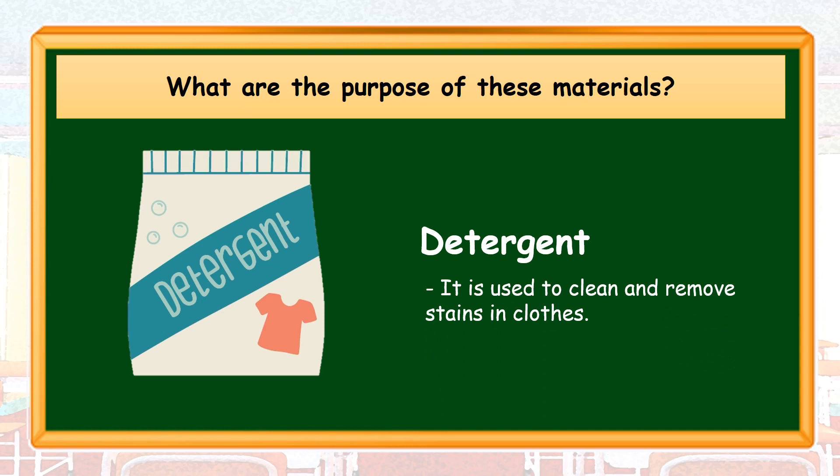Detergent is used to clean and remove stains in clothes. Detergent is an example of a cleaning agent. It is a water-soluble cleansing agent which combines with impurities and dirt to make them more soluble. Can you name some brands of detergent that you use?